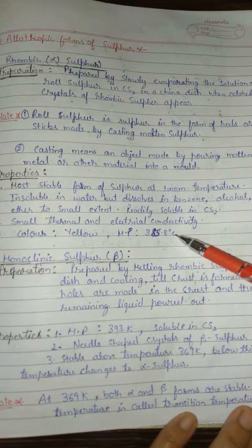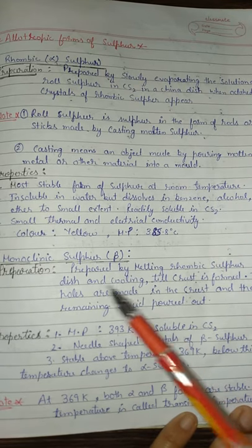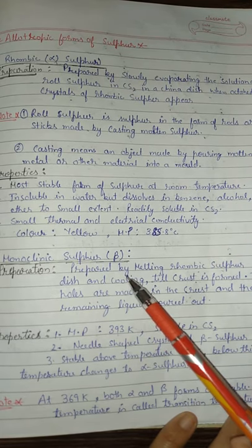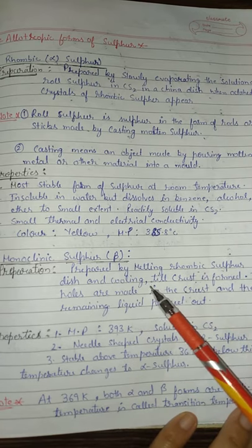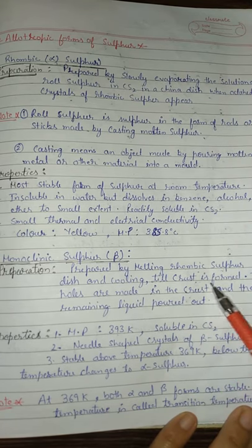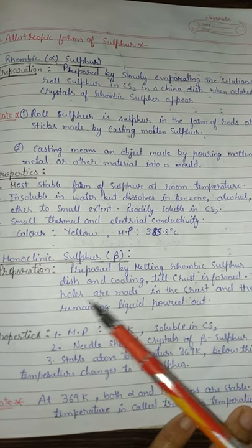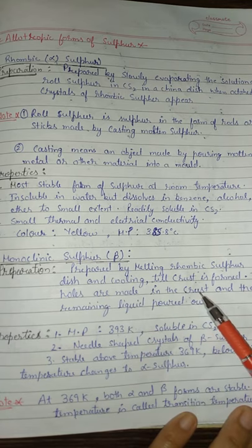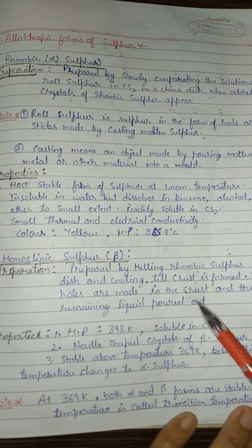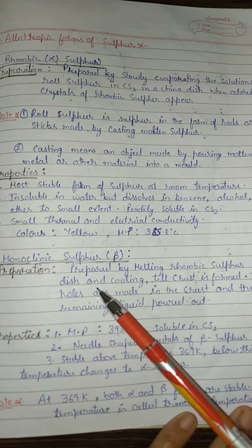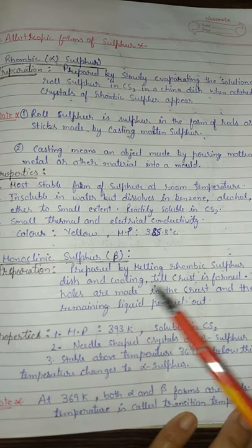Preparation of monoclinic sulfur: it is prepared by melting rhombic sulfur in a dish and cooling until the crust is firm. Two holes are made in the crust and the remaining liquid is poured out.